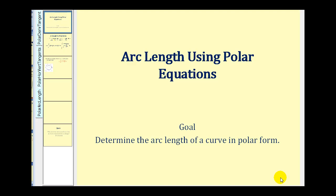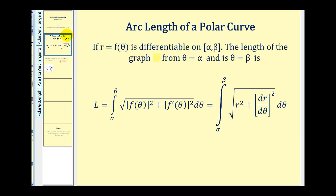Welcome to a video on arc length using polar equations. If the polar equation is differentiable on the closed interval from alpha to beta, then the length of the graph from alpha to beta is given as a definite integral from alpha to beta of the square root of f(θ) squared plus f′(θ) squared dθ, or we can replace f(θ) with r and f′(θ) with dr/dθ. These two equations are the same, just written with different notation.